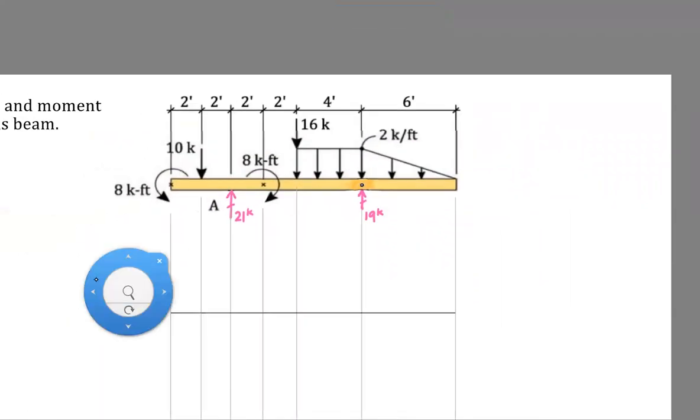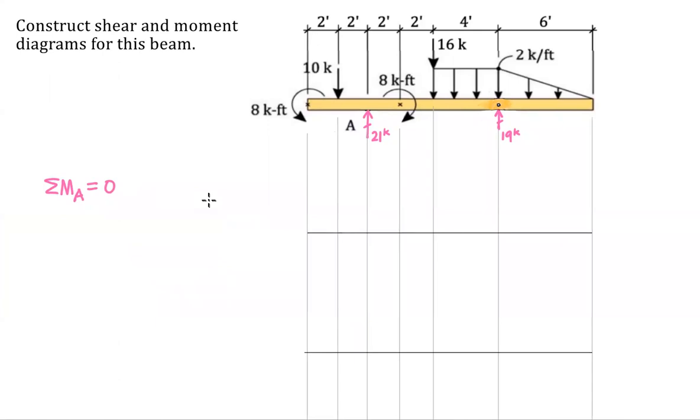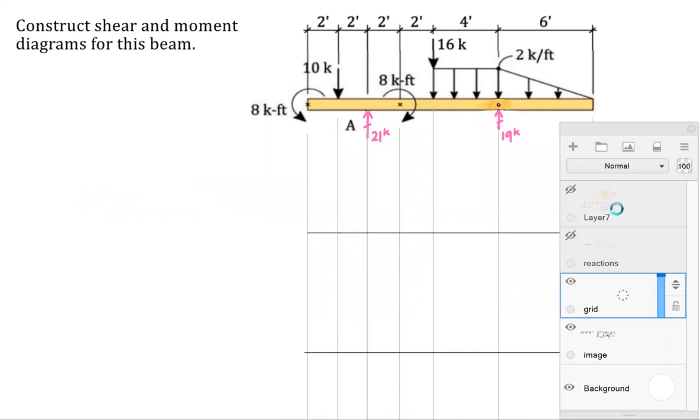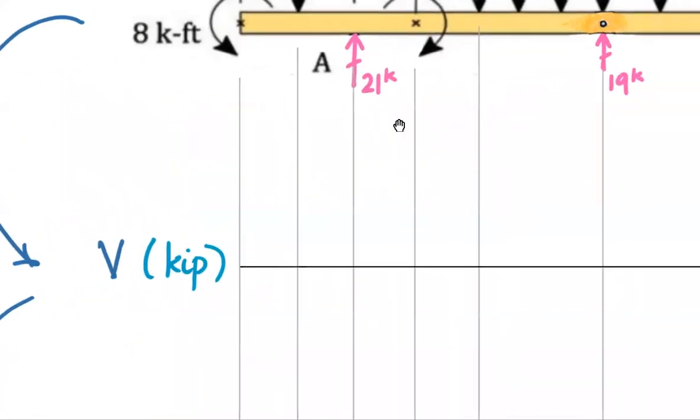Now that we've got our reactions done and quite a bit of work to get there, we're ready to do shear and moment diagrams. Our general procedure works something like this. We want to label our plots. The first plot will be our shear diagram. That is one integration from our free body. And then we'll get our moment diagram. That is a second integration from our free body. My shear force will be in kips, my moment in units of kips times feet.